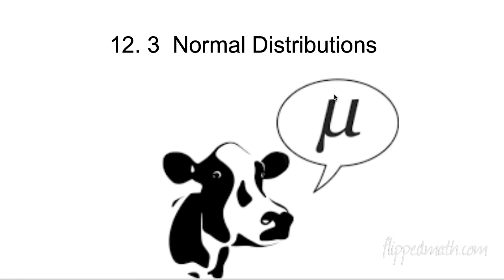Hey, welcome back. This is Mr. Kelly at K-Town, and today we're going to be talking about normal distributions. They were originally called Gaussian distributions, which is just not as pretty as normal. Eventually we decided to just call them normal distributions so we'd know that everything else is abnormal.